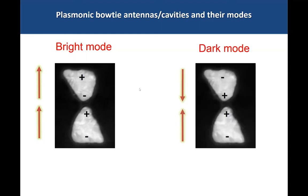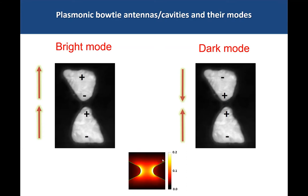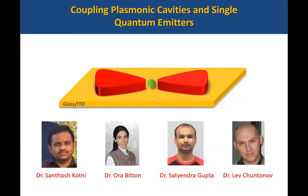There is also a dark mode in which the two dipoles face head-to-head, so they cancel each other and there is no emission to the far field. Nevertheless, both modes share one property: there is a strong electromagnetic field in the gap between the two nanoparticles. The particles confine the external field into the gap, as shown in this calculation of the field for the bright mode, with strong enhancement near the particles and in the center. We would like to put molecules or particles into this gap and observe the interaction with the bowtie.